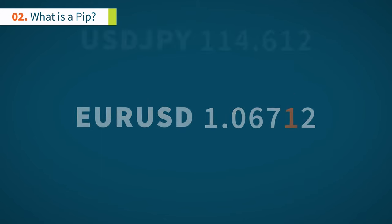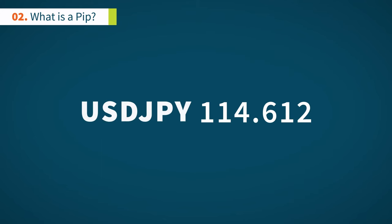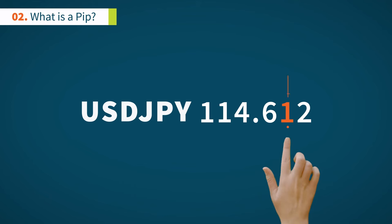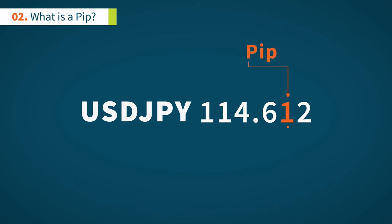Yen-based currency pairs like USDJPY are the exception and are measured to three decimal places. The PIP value is shown in the second decimal digit.